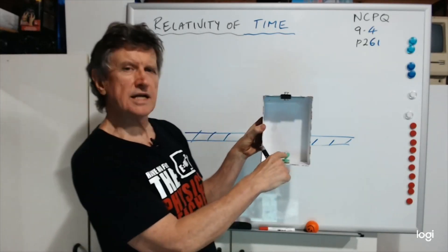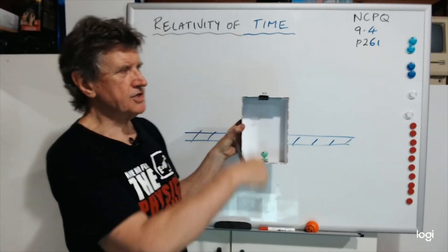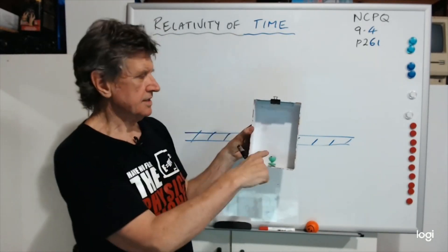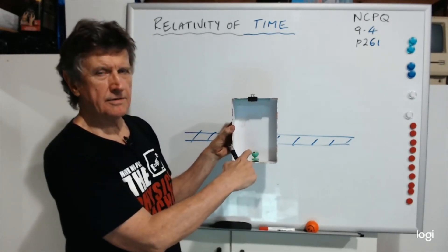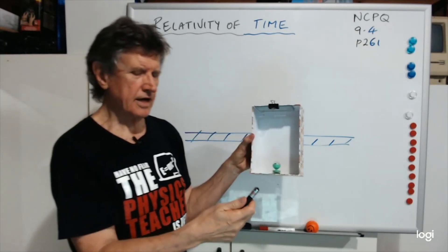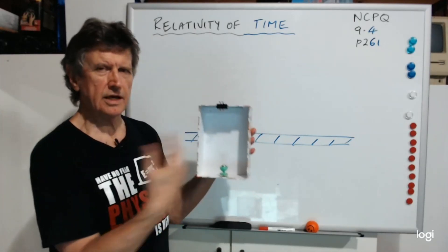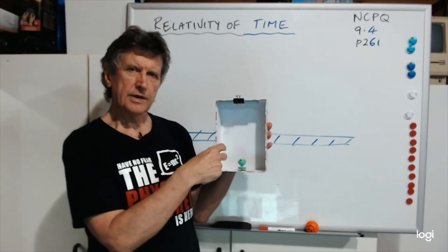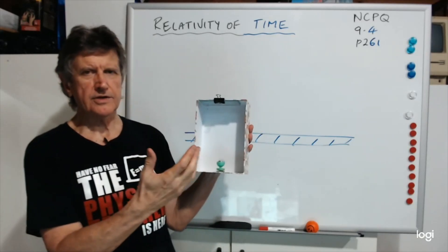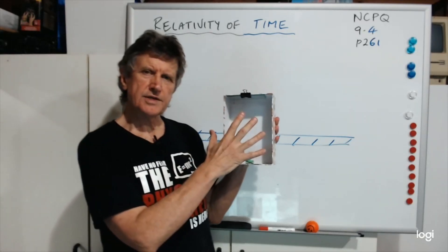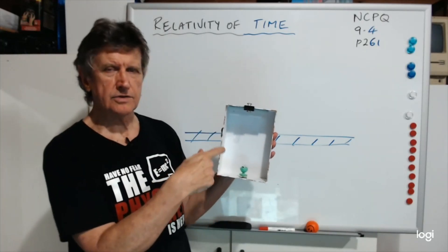Let's imagine there's a sensor in this light that can detect when the light leaves, and measure how long the time interval is to get back to the light. So the light beam has to go up and then back down, and we'll get a time for that. Now you would agree with the person aboard this — if I was aboard this train carriage and measuring the time for it to go up and down, I'd get a certain value.